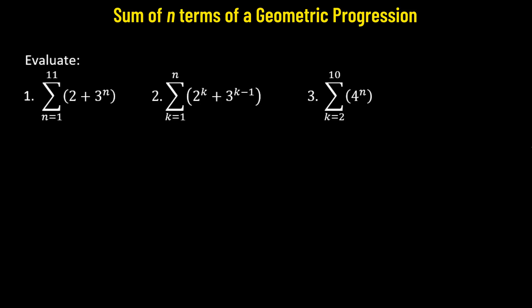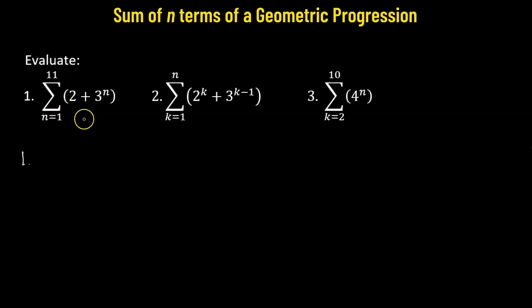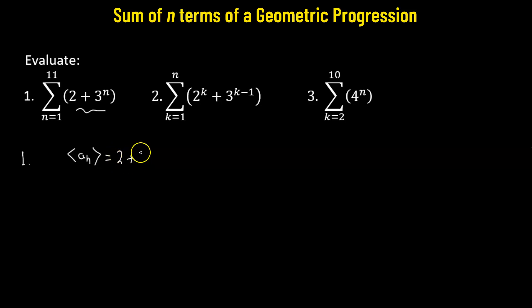We need to evaluate the sum of three problems. Let's begin with number 1. We have the summation of n going from 1 to 11, meaning we have 11 terms of the sequence given by 2 plus 3 raised to the power of n.